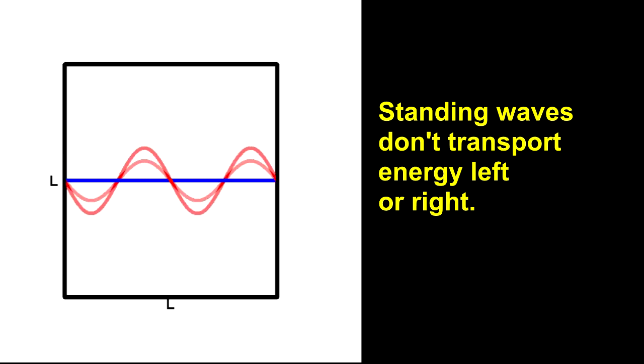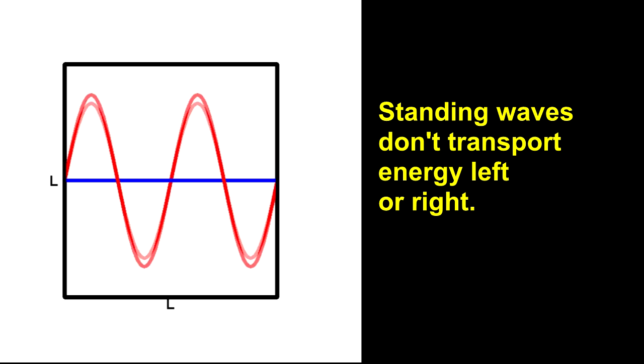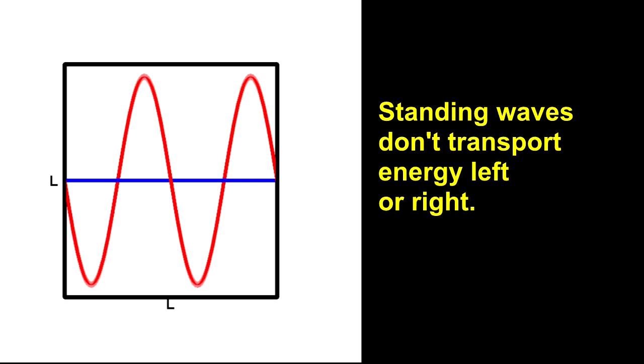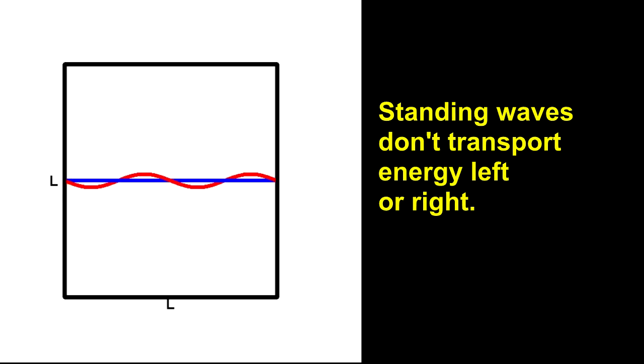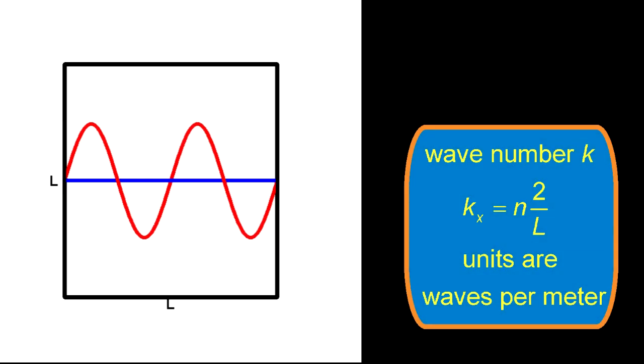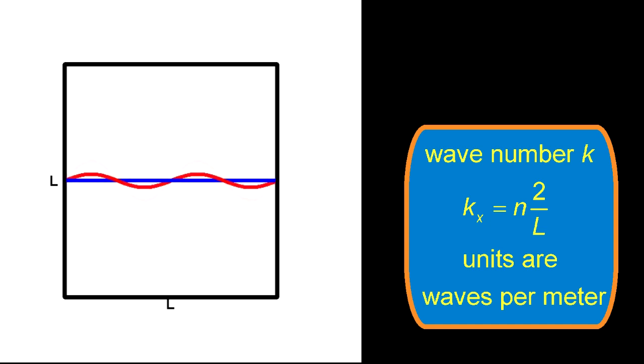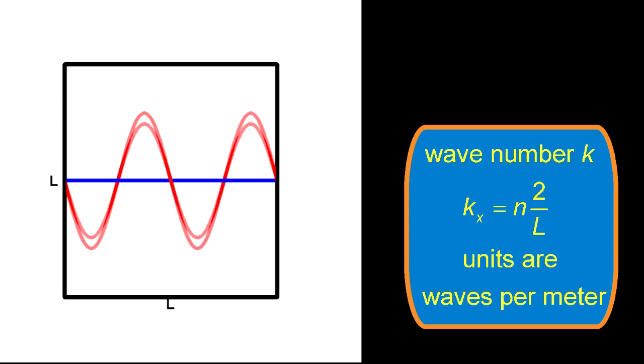Standing waves occur when the box size is an integral multiple of half the wavelength. We can express this relationship in terms of wavelength, meters per wave, but later we will find it more convenient to work in terms of wave number, which is the number of waves per meter.